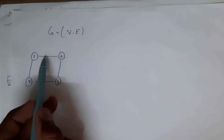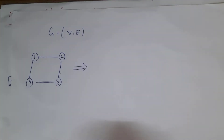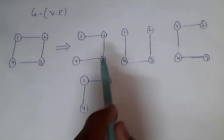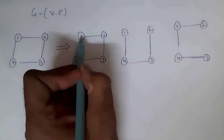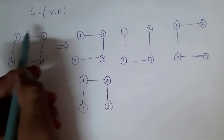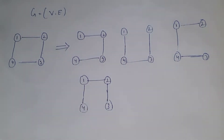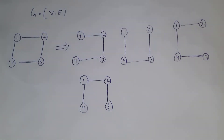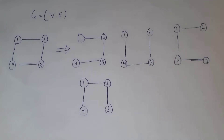In this graph, 1, 2, 3, 4 are vertices — we can also call them nodes — and these nodes are connected by edges. Now let us find the possible spanning trees for this graph. These are the four possible spanning trees. A spanning tree contains all vertices, so since there are four vertices, the spanning tree also contains four vertices, but with a minimum number of edges.